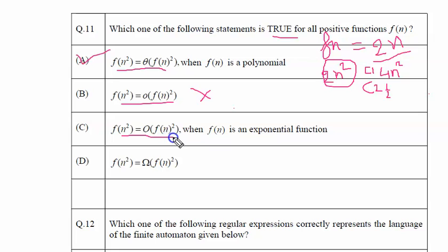Then if we say that it is an exponential function, f of n is an exponential function, then say the easiest exponential function that we have is 2 raise to the power n. Now if you put n as n square, it will become 2 raise to the power n whole square. And if we take the whole square of f of n, that is 2 raise to n whole square, it will become 2 raise to the power of 2n. Now this function is not a big O binding for 2 raise to the power of n square, and therefore this option is also not correct.